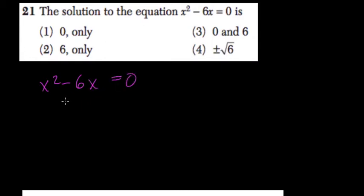Well here, we want to factor out x. It's a common factor, so we have x times x minus 6, and that equals 0.